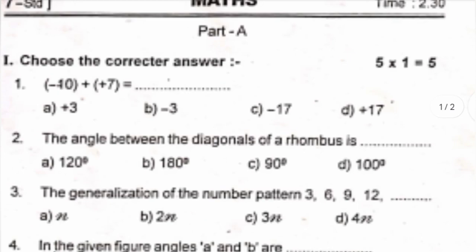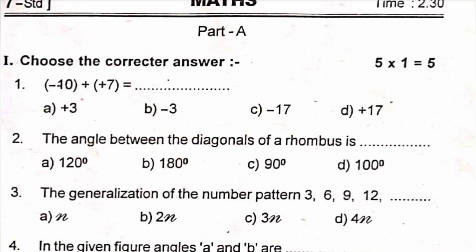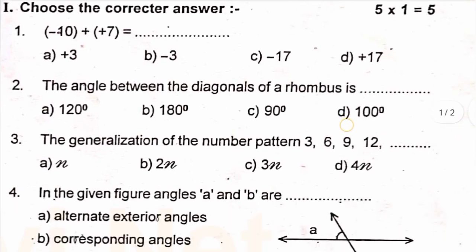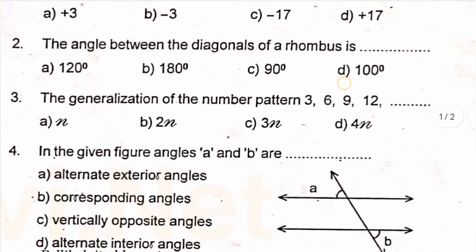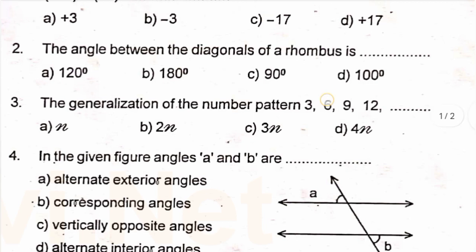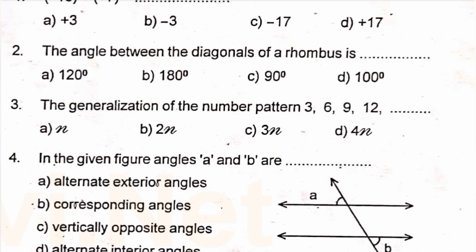Question 2: the angle between the diagonals of a rhombus is dash. Question 3: the generalization of the number pattern 3, 6, 9, 12, dash. Question 4: in the given figure of a rhombus, angles A and B are — options are alternate exterior angles, corresponding angles, vertically opposite angles, or alternate interior angles. Question 5: the sum of all angles at a point is dash.